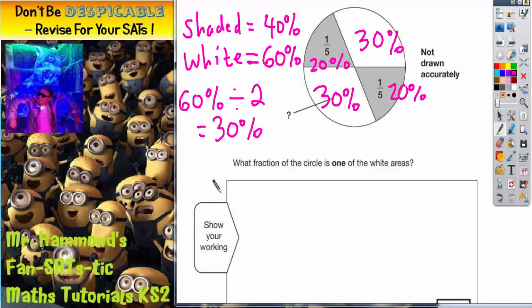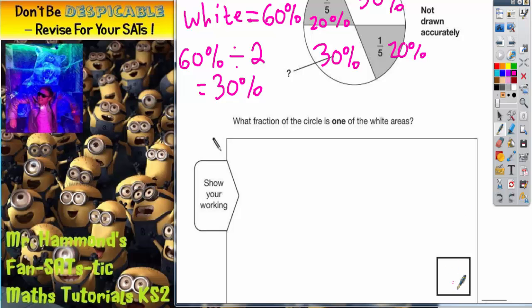Now, if we write 30% in this box here, we're not going to get any marks because it does say what fraction of the circle is one of the white areas. And 30% is not a fraction.